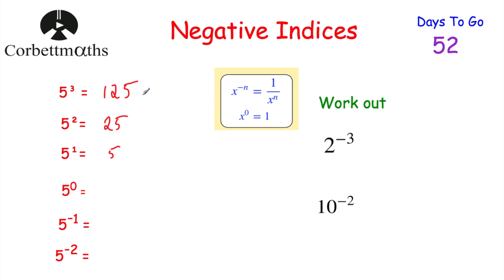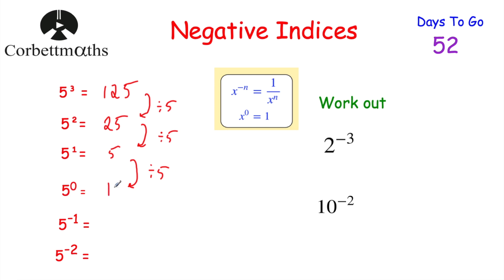Now let's look at our answers and see if there's a pattern. To get from 125 to 25 we divide by 5, divide by 5 again gives us 5, divide by 5 again gives us what 5 to the power of 0 is — so 5 divided by 5 is 1. That tells us 5 to the power of 0 equals 1. In fact, any number — apart from 0 — to the power of 0 is equal to 1. So x to the power of 0 equals 1, as long as x isn't 0.